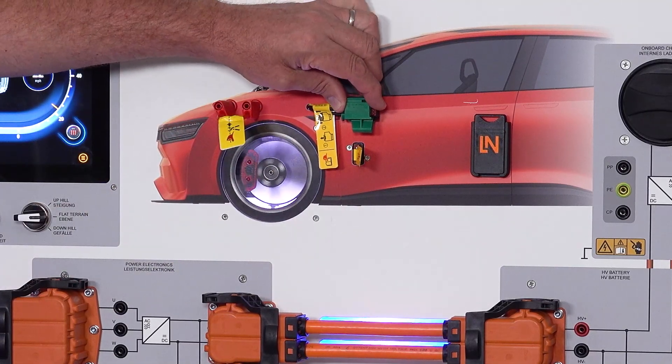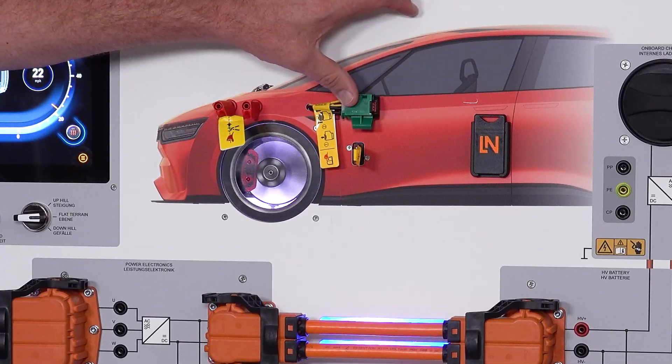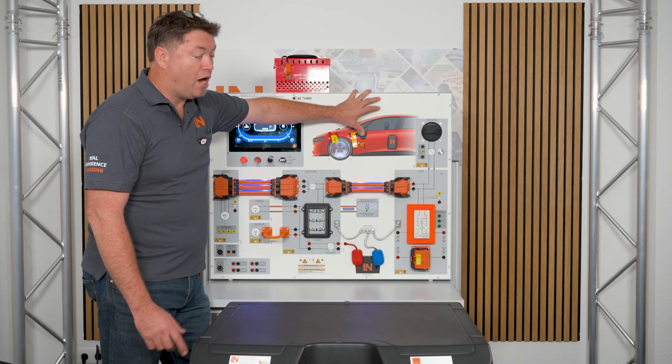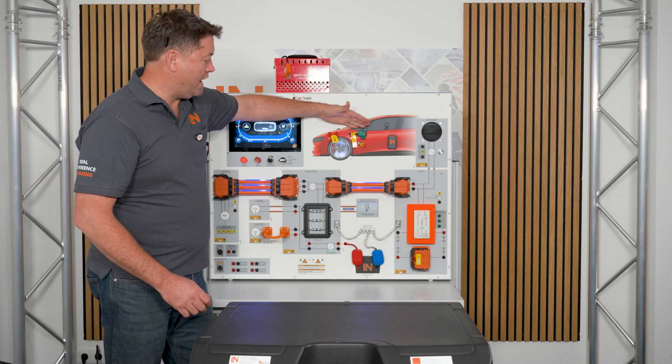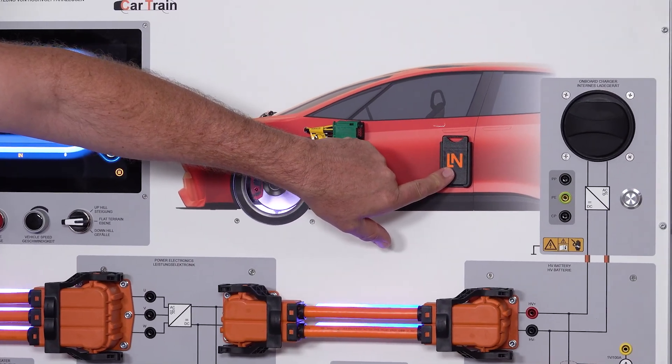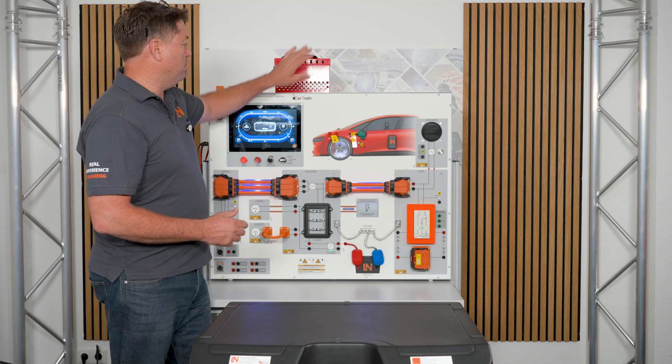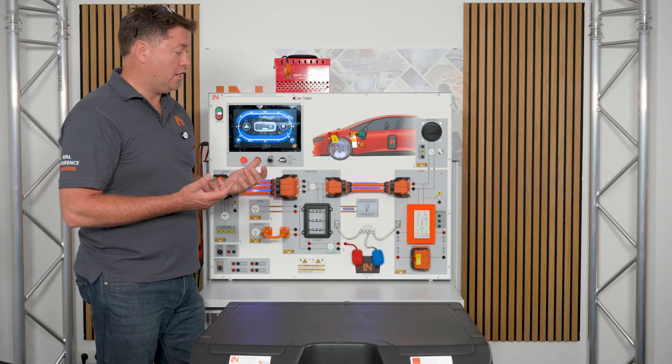The green connector here is the low voltage service disconnect for technicians, so they're able to use that as part of the shutdown procedure. We have our smart key here as well which is an integral part of isolating the vehicle. The smart key needs to get put into the safety box when we're shutting down.